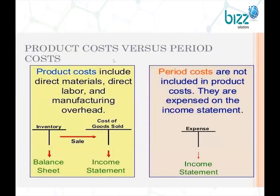Let's look at product cost versus period cost. This concept is very important. Product cost includes direct raw materials, direct labor, and manufacturing overhead. Period cost is the selling, administrative, and other expenses, which appear on the income statement as OPEX.